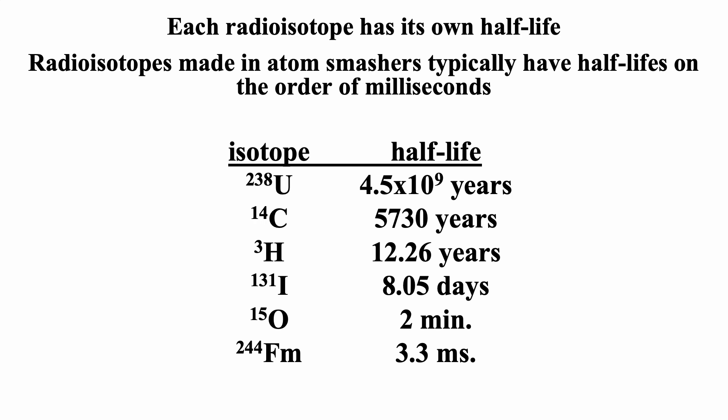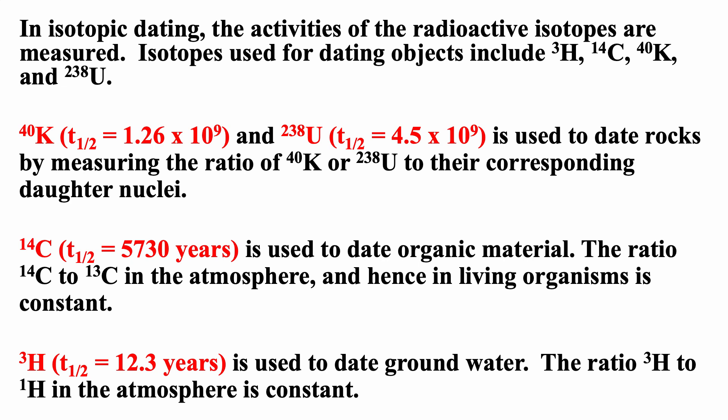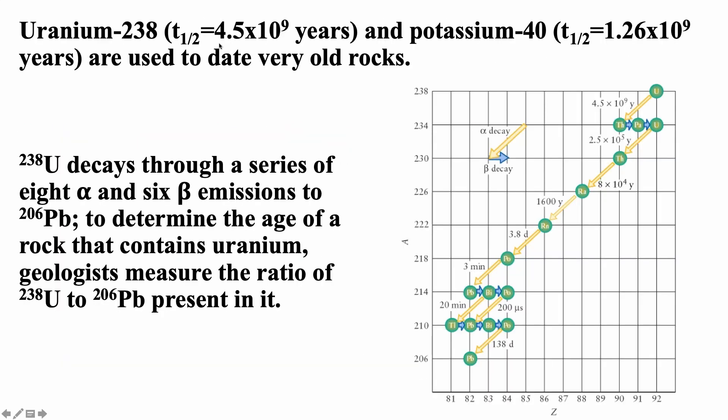I mentioned that radiometric dating uses radioactive decay to determine how long something, like in carbon-14, how long ago it died. Or in potassium-40, uranium-238, you can actually use that radiometric dating to date rocks. How long ago was the rock formed? Uranium-238 has a half-life of 4.5 times 10 to the 9th years. Potassium-40 has a half-life of 1.26 times 10 to the 9th years. They can be used to date very old rocks. Uranium-238 goes through a series of eight alpha decays and six beta emissions to get to lead-206. Lead-206 is a stable isotope. Uranium goes through many, many steps before it finally gets to a stable isotope. Geologists can measure the ratio of uranium-238 to lead-206 to actually get an idea of how long ago that rock was formed.